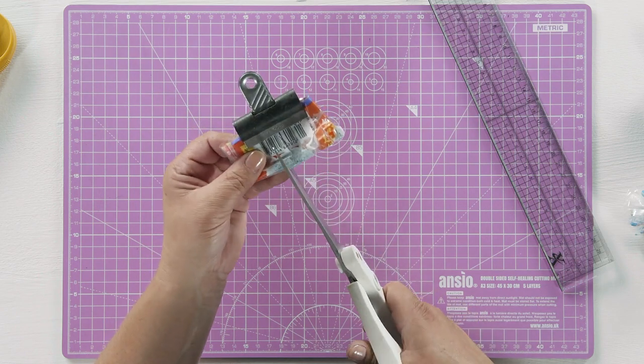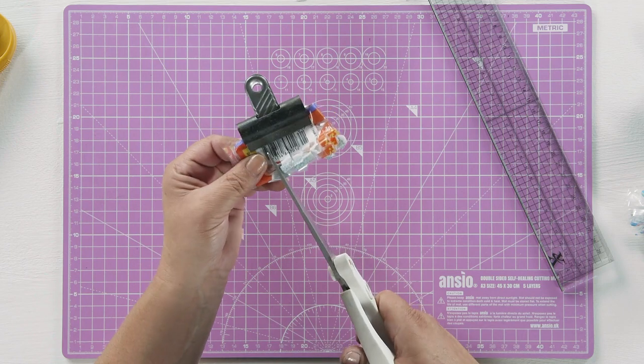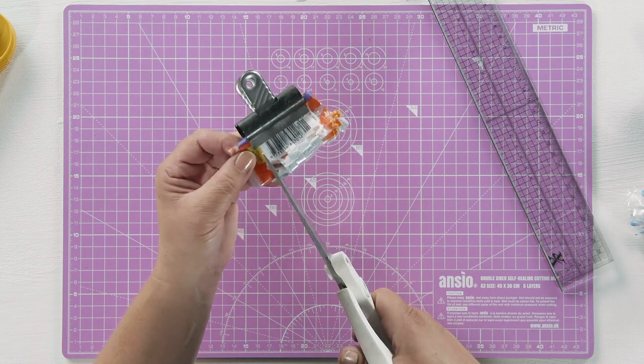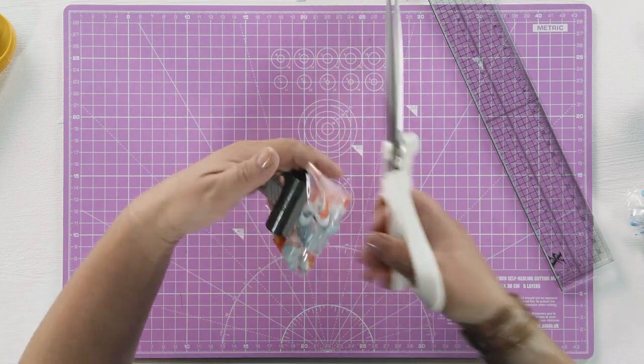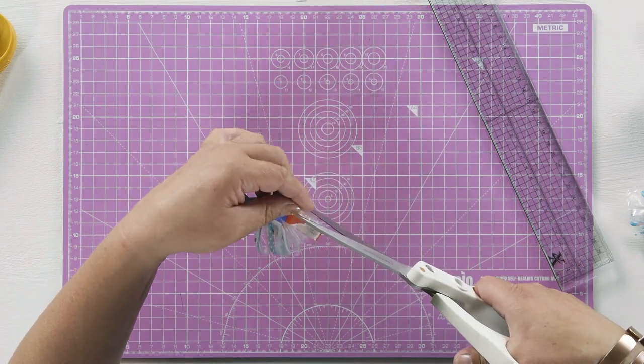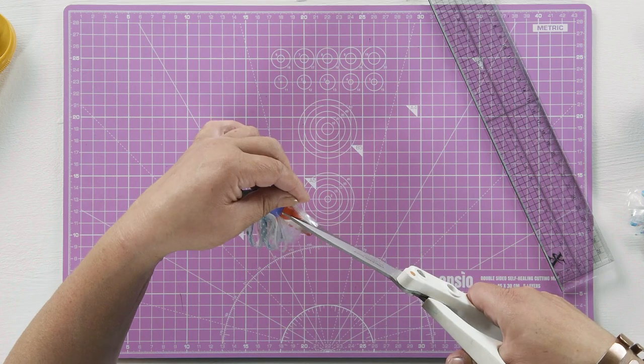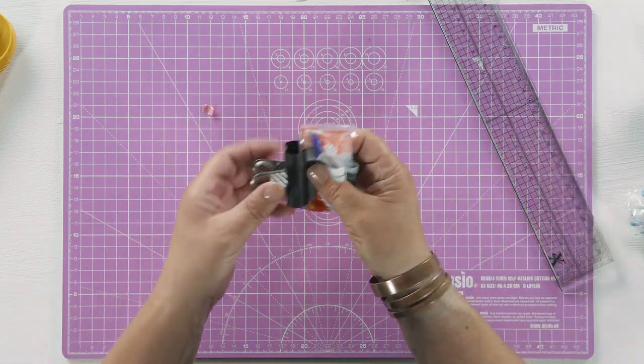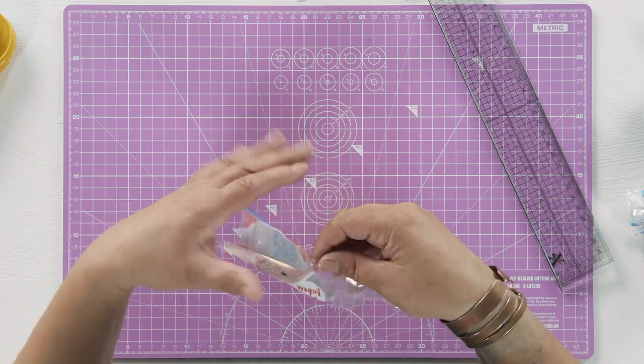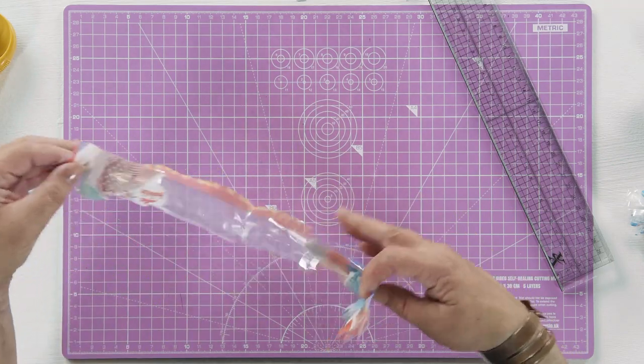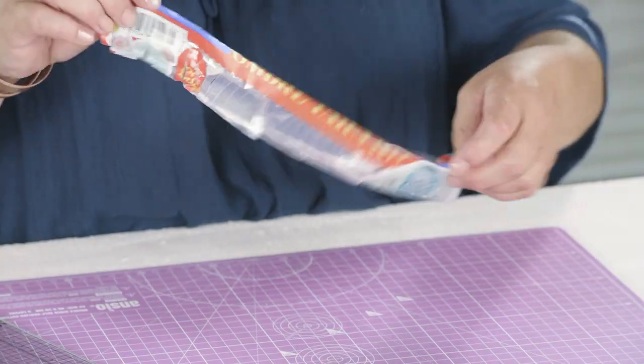You don't have to be particularly accurate. Once your flower is made, you won't notice if one petal is bigger than another. So chop them like this. Remove the bulldog clip. Oh, I think I may have chopped a petal in half there. So you've got a long strip of bobbly fringing.